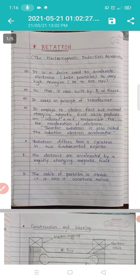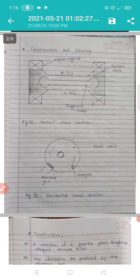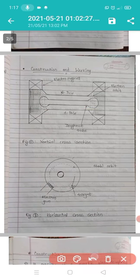Then we have to learn the construction and working of betatron. The construction is as shown in figure. It consists of a quartz glass donut shaped vacuum tube. This is the donut shaped vacuum tube.